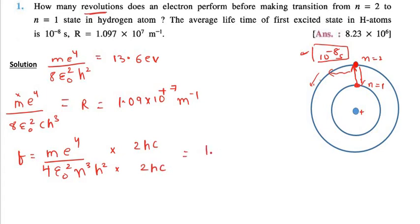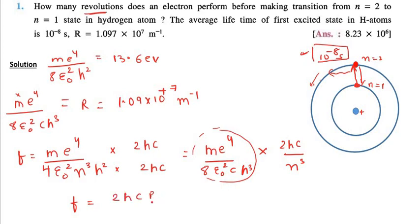This equation turns out to be m e raise to 4 upon 8 epsilon 0 square then c and h cube multiply by 2 hc. I am going to pull n cube over here and now I know this value is called Rydberg's constant. So my frequency equation is now finally reduced to 2 hc R upon n cube.